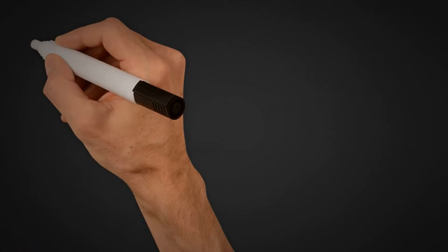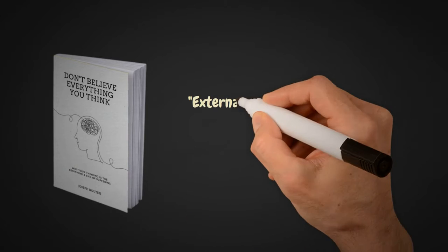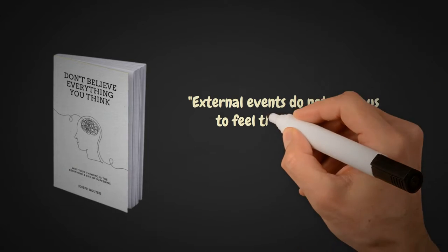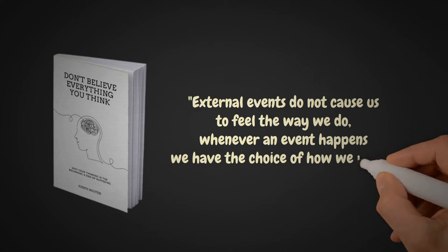In the book Don't Believe Everything You Think, Nguyen writes that external events do not cause us to feel the way we do. Whenever an event happens, we have the choice of how we react. To explain this, Nguyen gives the following example.